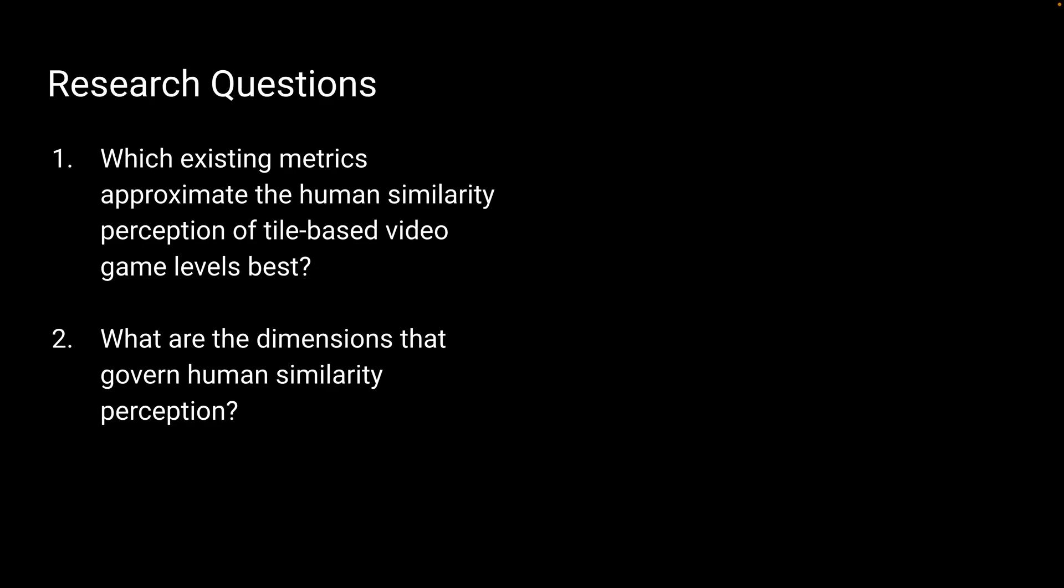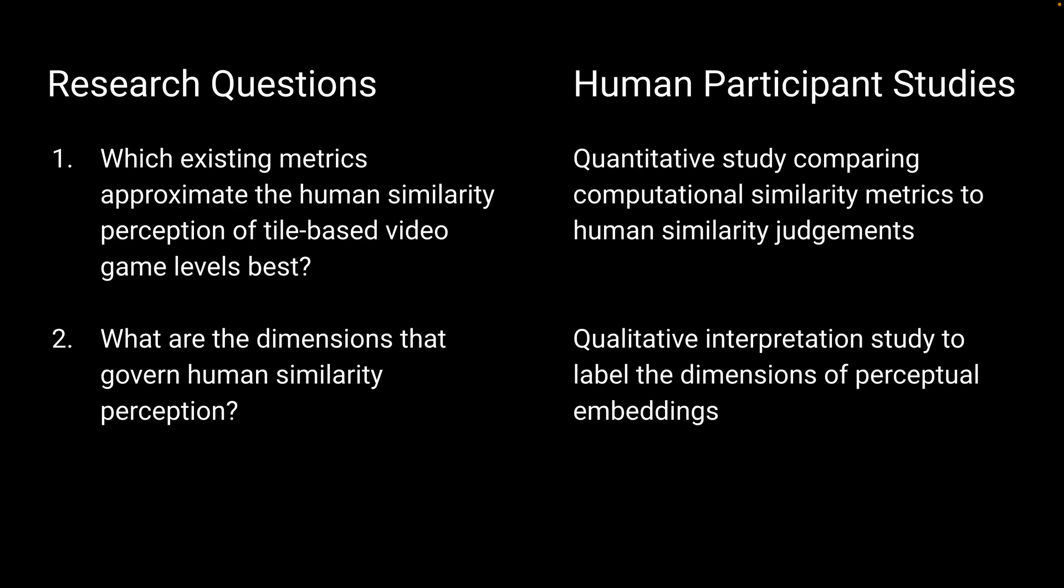We formulate two research questions. First, which existing metrics approximate the human similarity perception of tile-based video game levels best? And second, what are the dimensions that govern this human similarity perception? We address these questions with two human participant studies: a quantitative study comparing computational similarity metrics to human similarity judgments, and a qualitative interpretation study to label the dimensions of perceptual embeddings.